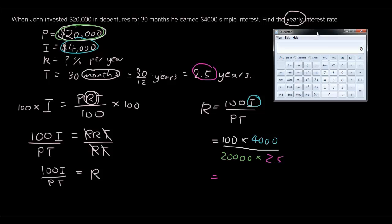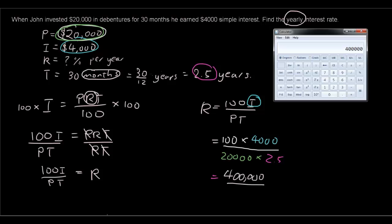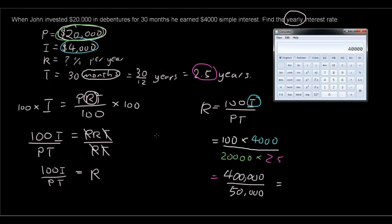So when you type something like this into the calculator you want to make sure the top is done first and the bottom is done first before you divide them together. So let's do 100 times 4000. So you got 400,000 on the top. So I'm just going to write that down. And the bottom is 20,000 times 2.5 is 50,000. And now you're going to go top divided by bottom. So 400,000 divided by 50,000 is 8.